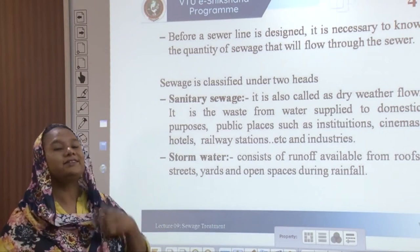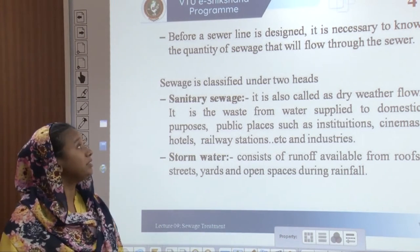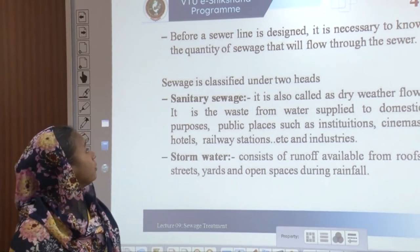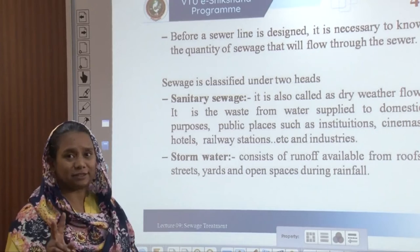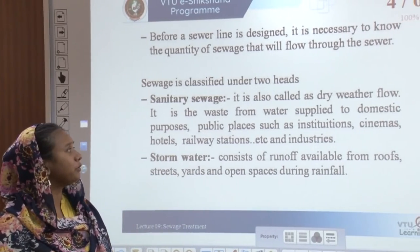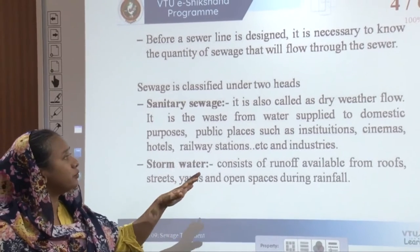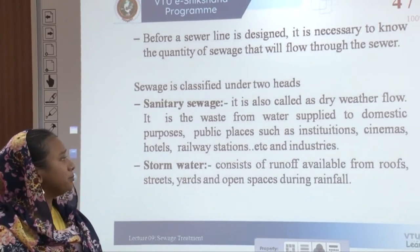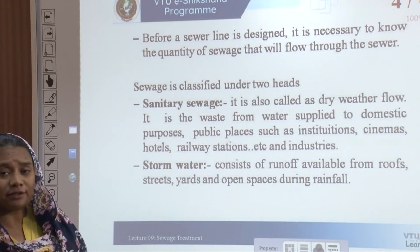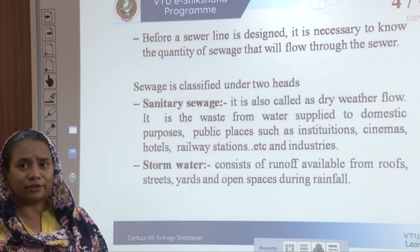Before any sewer line is designed, it is necessary to know the quantity of sewage that flows through a sewer. Sewage is classified into two heads: one is sanitary sewage, also called dry weather flow, which is waste water supplied for domestic purposes, public places such as institutions, cinemas, hotels, railway stations, and industries.